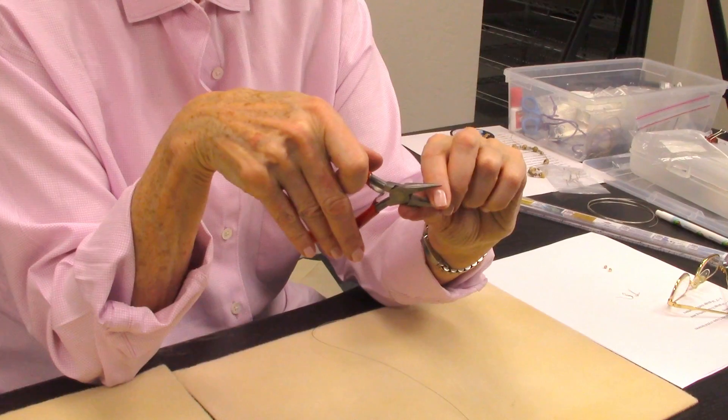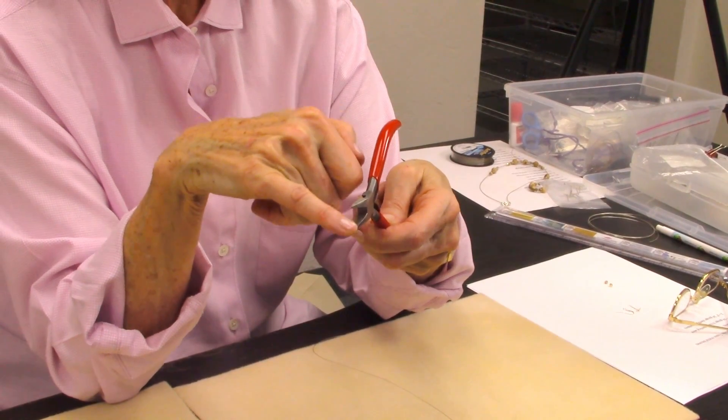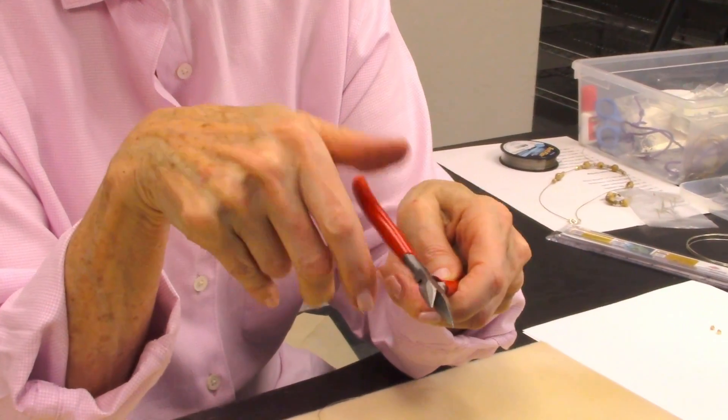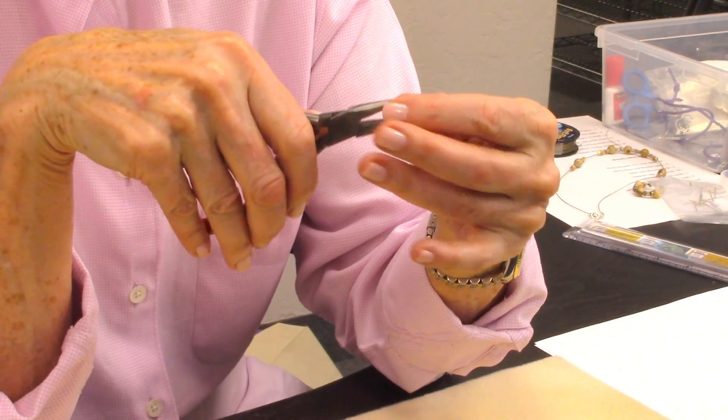For this project I'm using two tools: first is my round nose pliers and second my chain nose. If you have pliers which are scored, that has rough ridges on the inside, you need to be very careful because you don't want to score the wire. You can use smooth pliers or put some tape over it.